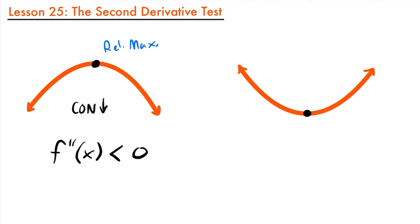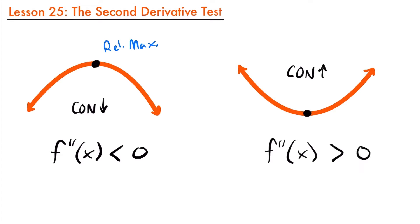What about this function over here? This is an example of a concave upward function, or concave up. In this case, the slope, or the first derivative, is increasing as we move along this function. The slope at this point is negative, but as you move along the function, that slope begins to move closer to zero until it hits zero, and then it gets greater in the positive direction afterwards. So in this case, the rate at which the slope changes, or the second derivative, is going to be greater than zero, or positive.